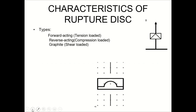The types of rupture disk are: first, forward acting; second, reverse acting; and third, graphite type. Next is the cost. The cost ranges from 2,800 to 10,000, and many times it goes beyond 25,000 as well.